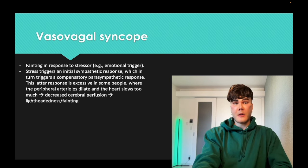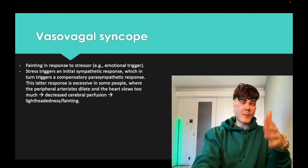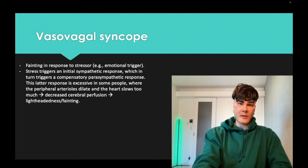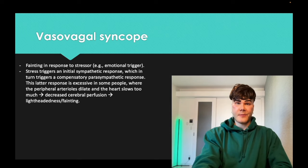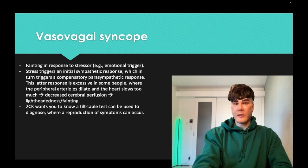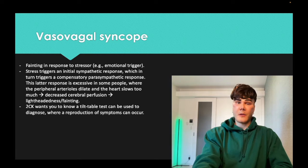Vasovagal syncope typically occurs in a young 20s–30s female with an emotional stressor — you get a quick sympathetic response, baroreceptor firing rate increases, then an excessive compensatory parasympathetic response follows causing heart rate to decrease too much and vascular tone to be insufficient, leading to lightheadedness and fainting. On USMLE, the answer might be failure to increase heart rate appropriately or failure to maintain vascular tone. For 2CK/3, a tilt table test is done to reproduce and diagnose vasovagal syncope.